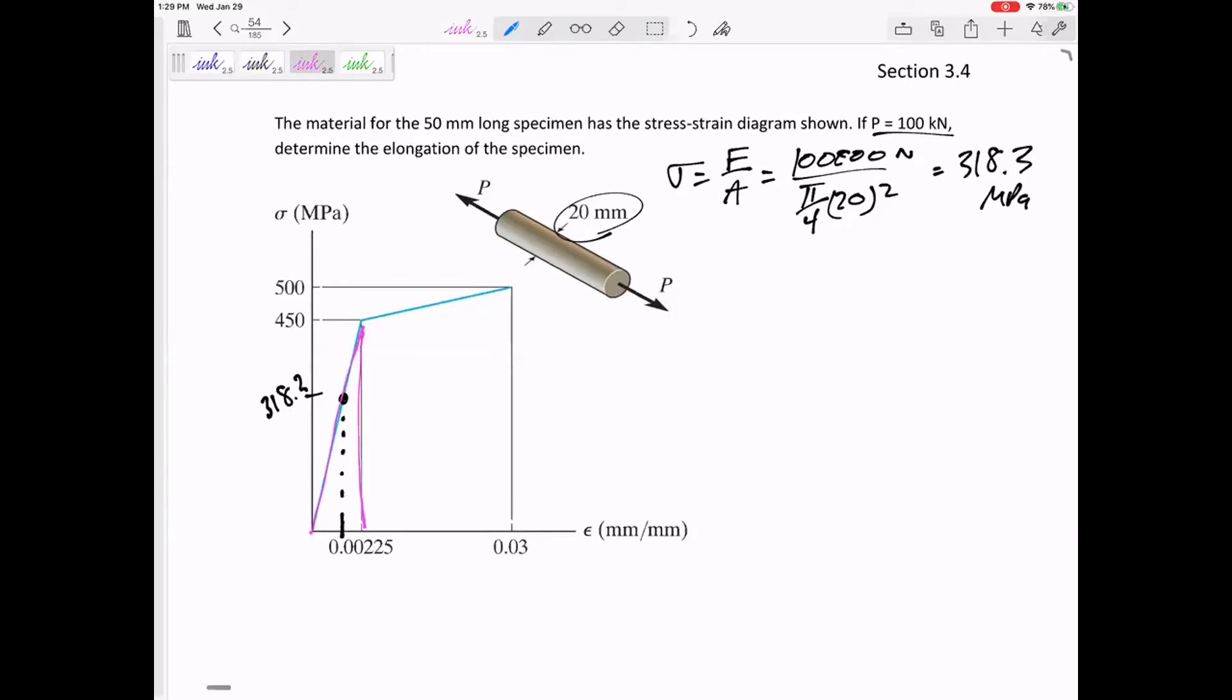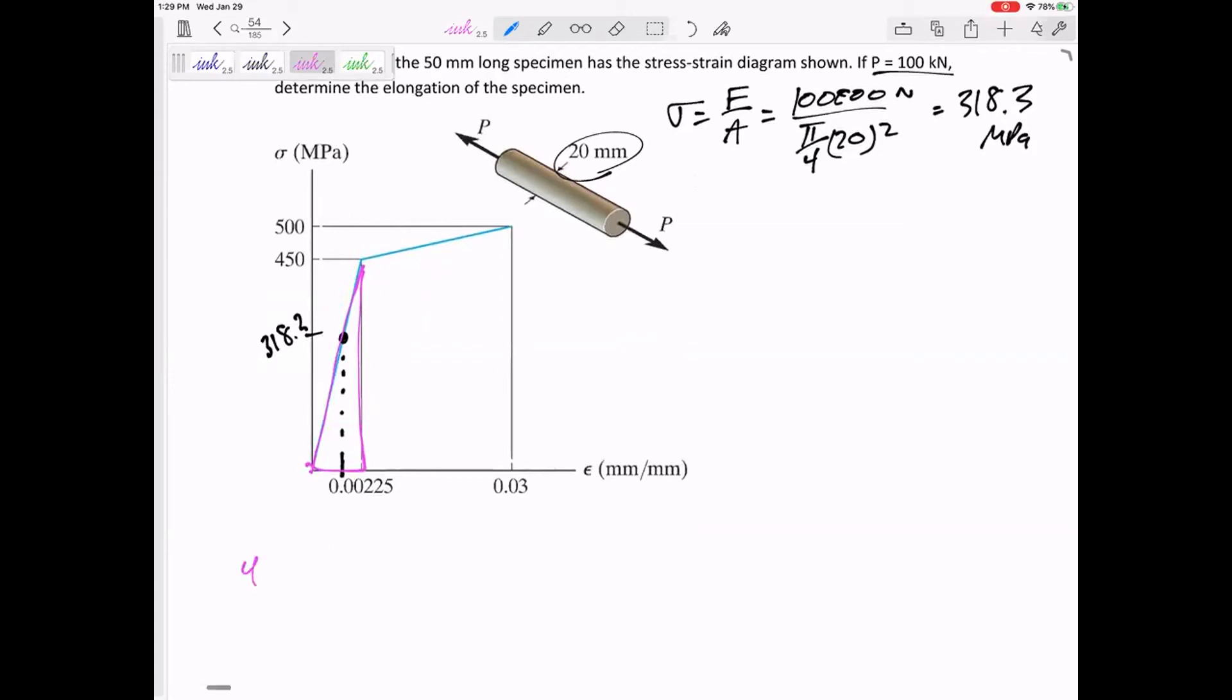I don't know if y'all like this, but I would say that this triangle right there of 450/0.00225 is the same thing, 318.3 over, I'll call it X. This is E, right? Rise over run. That's the slope. But anyway, E equals 318.3 over X. X = 0.001592 millimeters per millimeter. So what did I just find? I found where I was on the X axis. That is the strain while the force P is being applied.